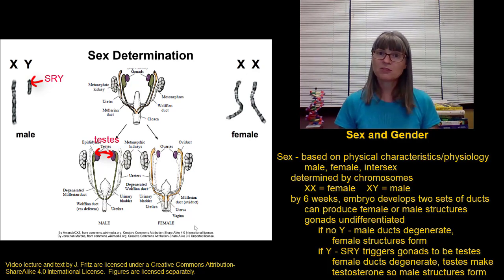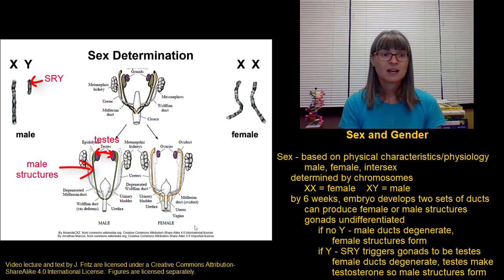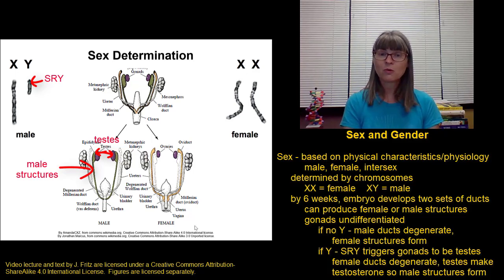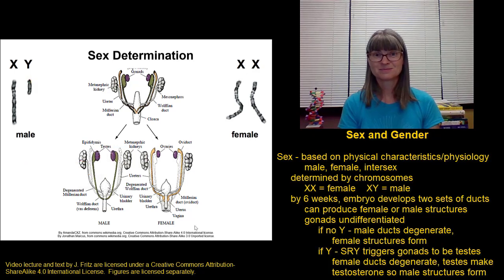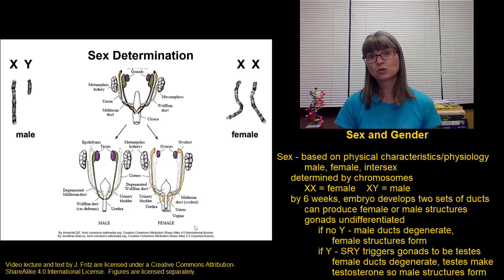So we lose the ducts that would become the female structures. Testosterone then stimulates the ducts that would become the male structures to form things like the ductus deferens, the epididymis, and the other male reproductive structures. Testosterone also stimulates the development of male external genitalia so that a penis and scrotum form rather than a vulva. Most of the time, everything works as planned — individuals with two Xs develop female genitalia and reproductive structures, and individuals with an X and a Y develop male reproductive structures and male genitalia.